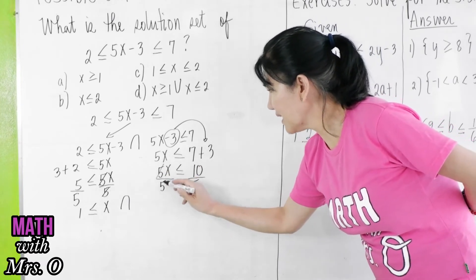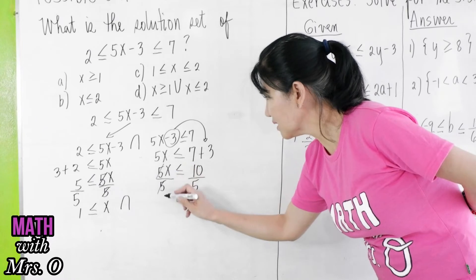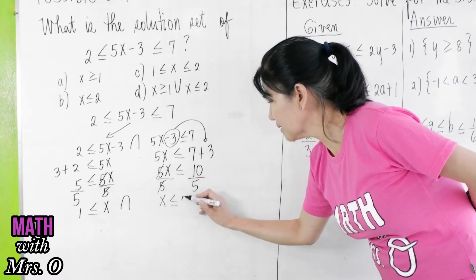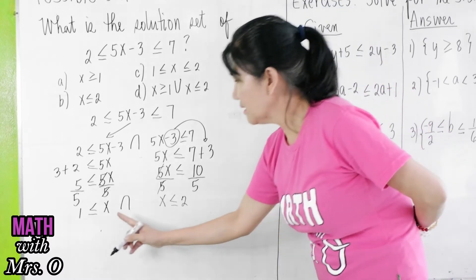You can now cancel 5 here. x is less than or equal to 2. Now, in this case, for you to get the intersection...